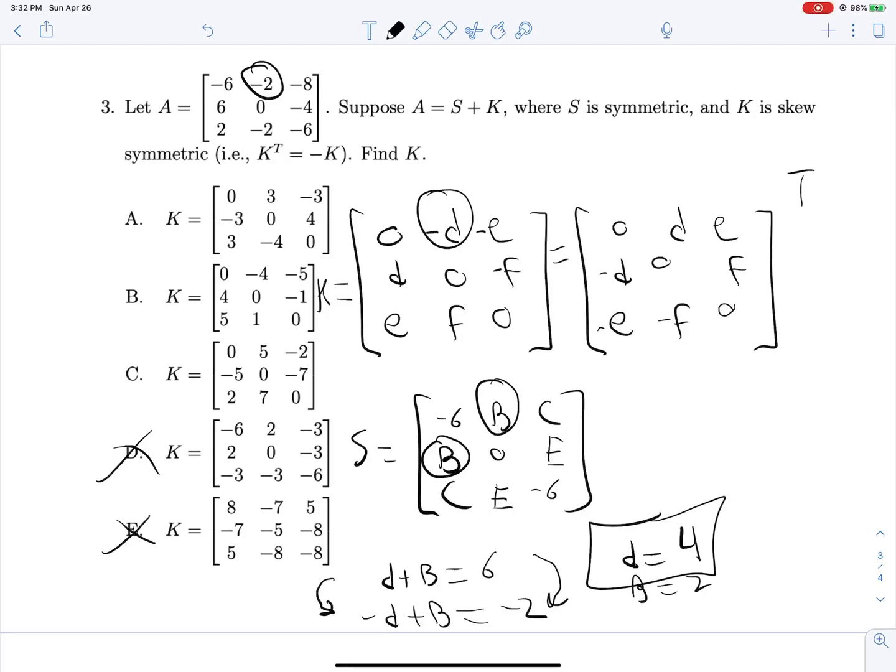But the only one we care about is the one that came from our skew symmetric matrix, which gives us four. And we get our answer here and you can go through this process for all of the other entries. And you'll see that since we get a system of two equations to solve for each of these, we are able to find all the entries.